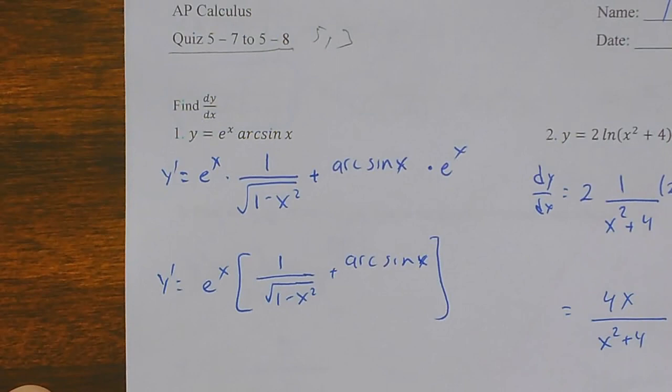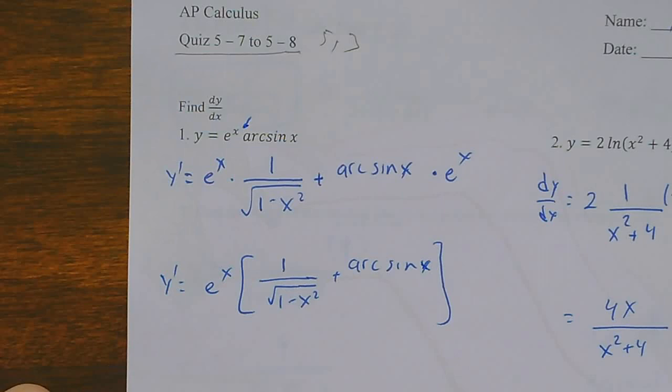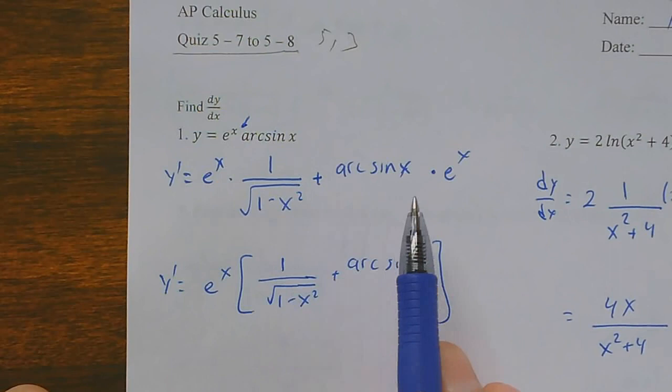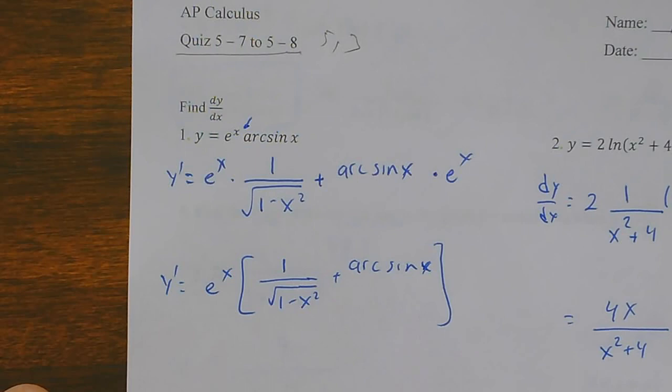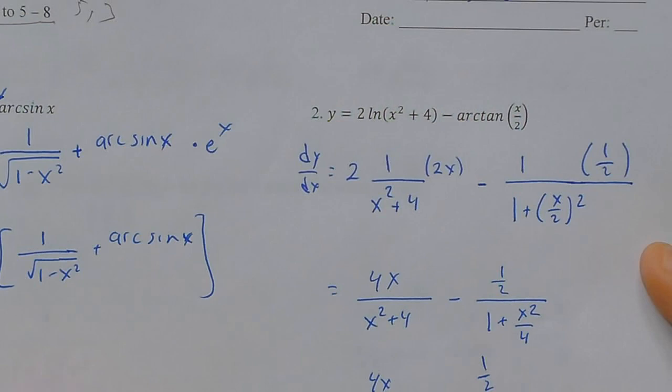Number one is a product rule. You should recognize that as: first times derivative of the second, plus second times derivative of the first. I cleaned it up a bit — I factored out e to the x and left it like that. We could combine those fractions and some people did, but I would leave it like that.